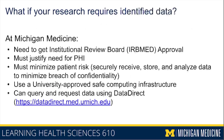If you're doing research, you'll sometimes need access to identified data — specific ages, specific dates. It's very rare that you can answer a meaningful research question without access to some identifying information. At Michigan Medicine there is a process for this: the first step is to get IRB approval. IRB stands for Institutional Review Board, a board designed to protect the interests of research participants. In the application you must justify why you need access to PHI.